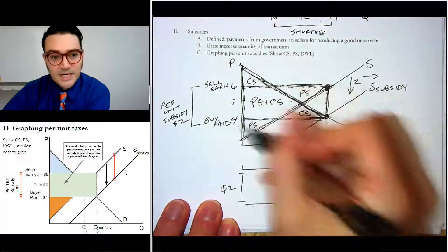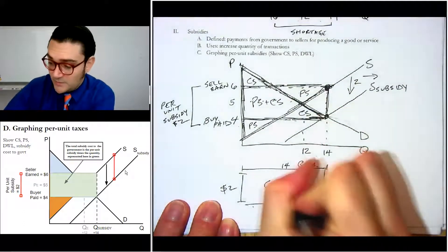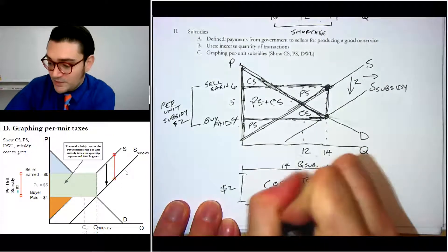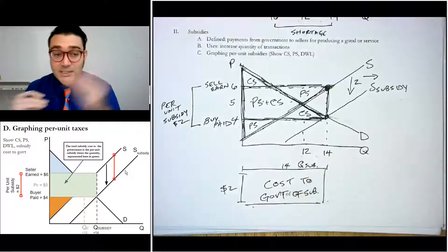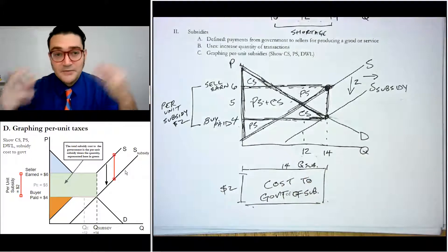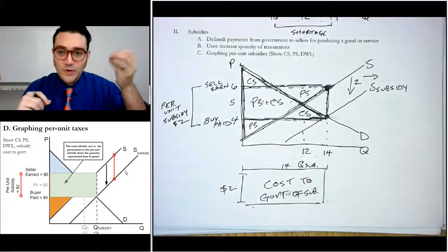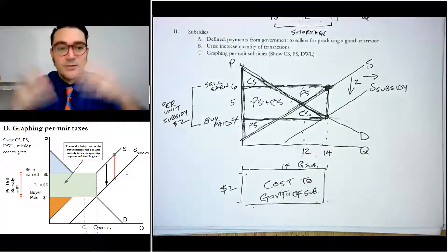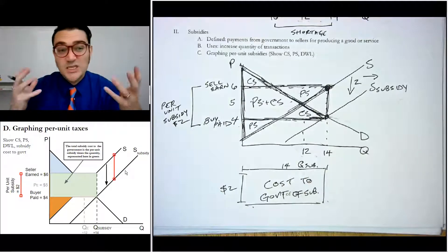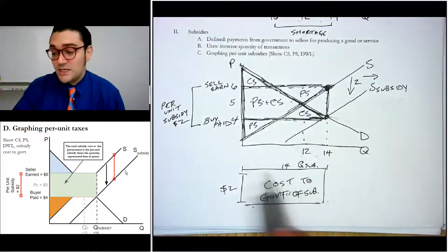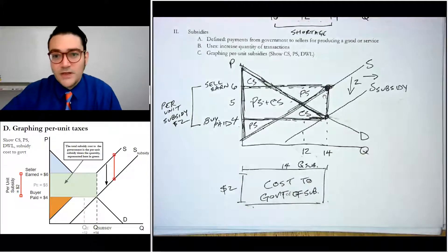And again, if you can imagine that box, right? Imagine that box a little bit. That's the area of the cost to government of the subsidy. Because again, a tax revenue box would be the amount that's bought and sold under the tax times the actual amount of the tax. So if you bought and sold 10 and the tax was $2, the tax revenue box would be 20. In this case, we're figuring out how much does this thing cost the government? Well, you're going to have 14 times the two. So it's $28.